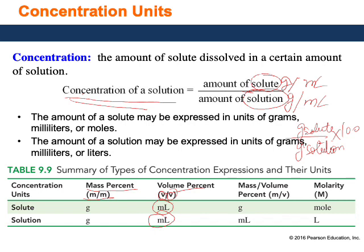Another unit is when the solute is measured in grams but the solution is measured in mL. Since mass is over volume, this unit is called mass over volume percent, abbreviated as m/v. Whenever something is expressed in mass over volume percent, we say it is grams of solute in a certain mL of solution.